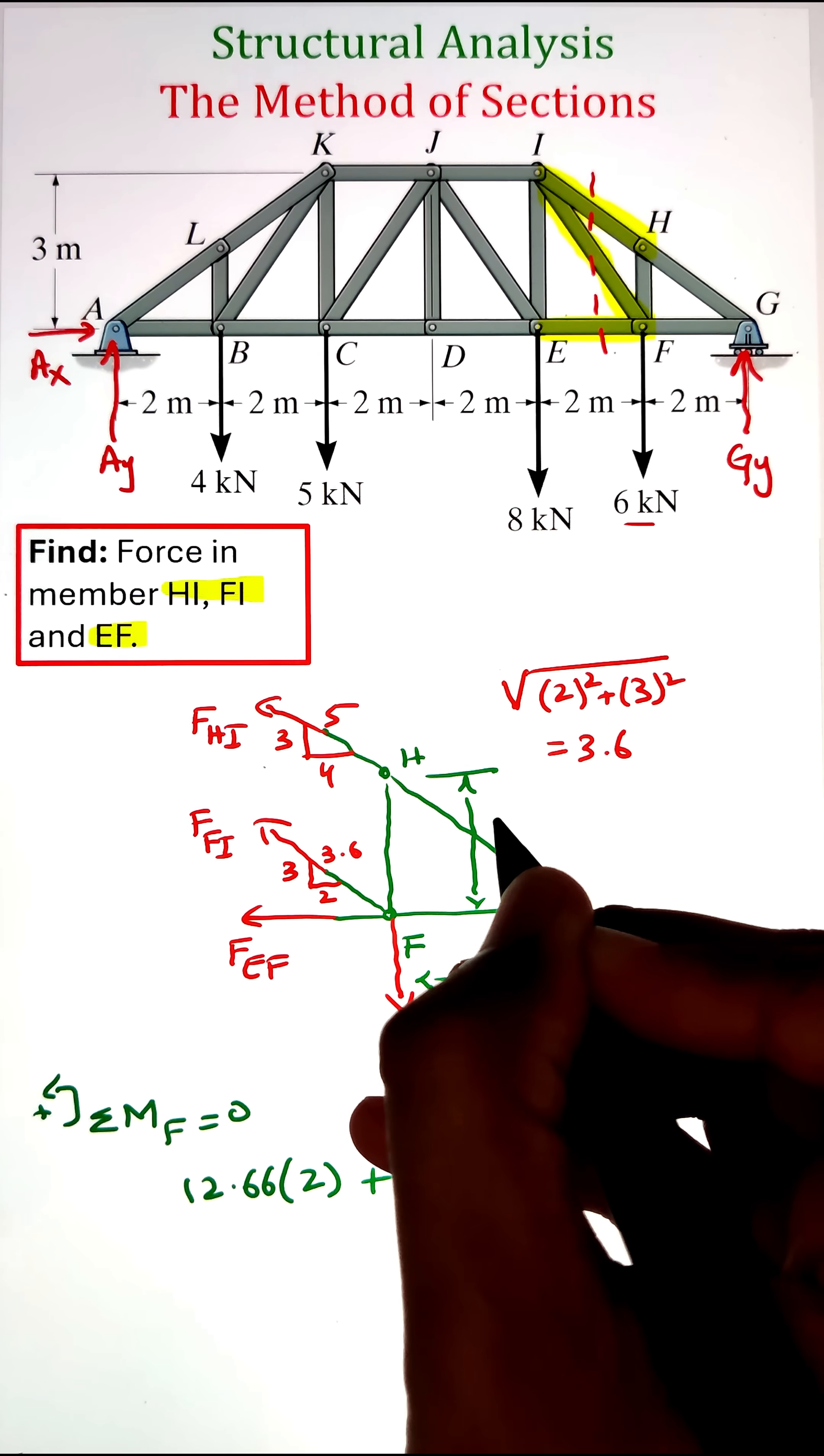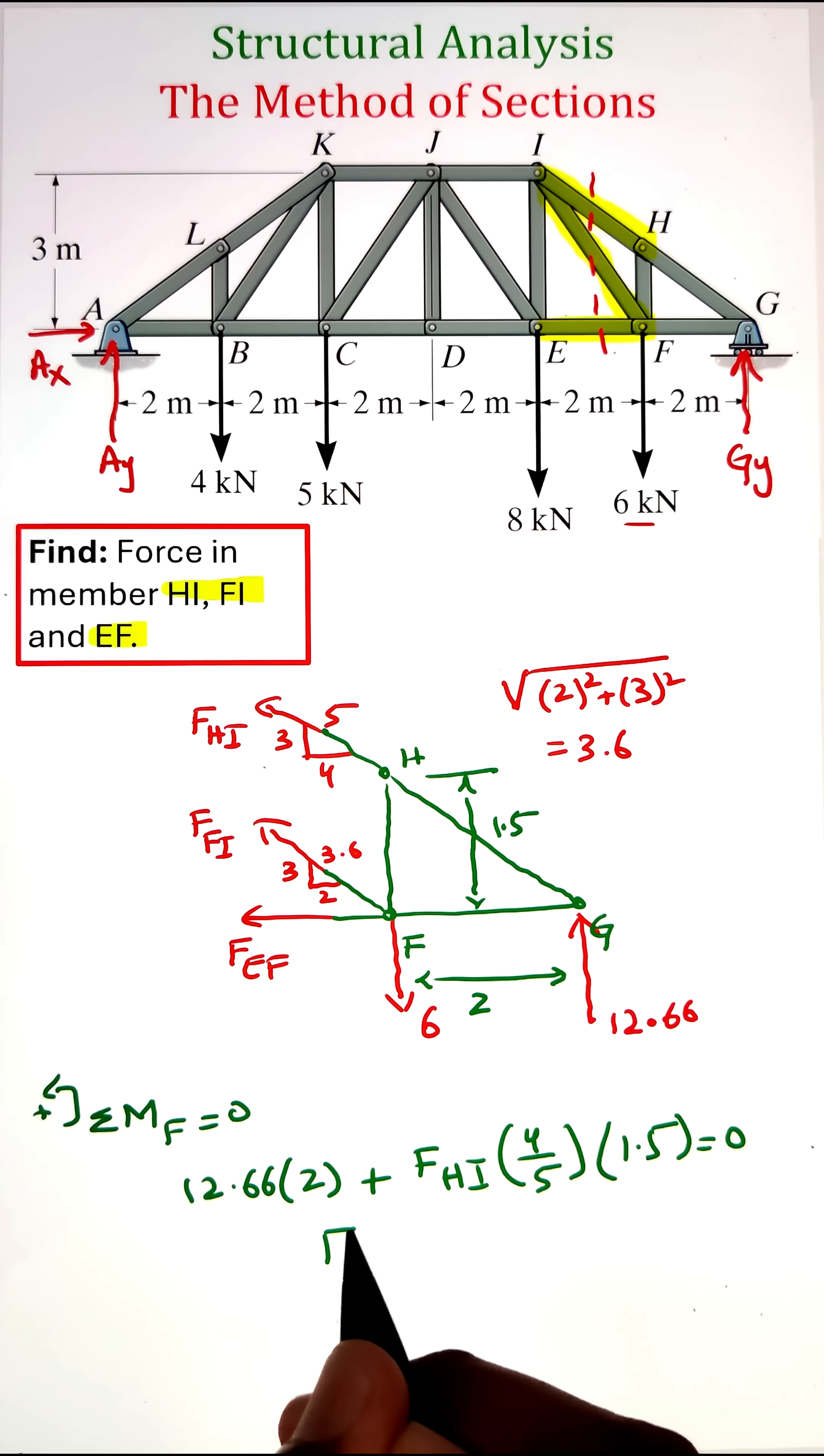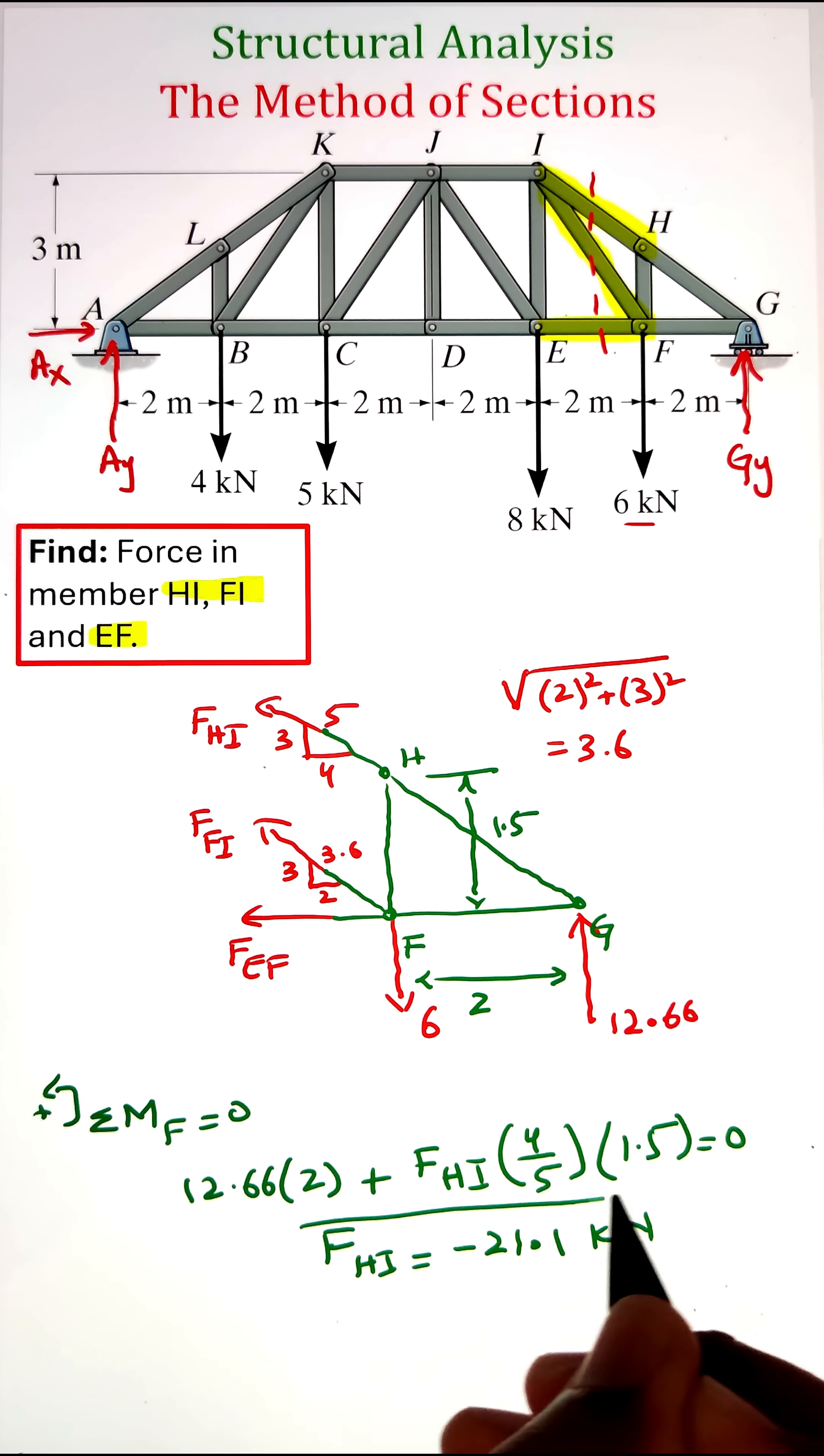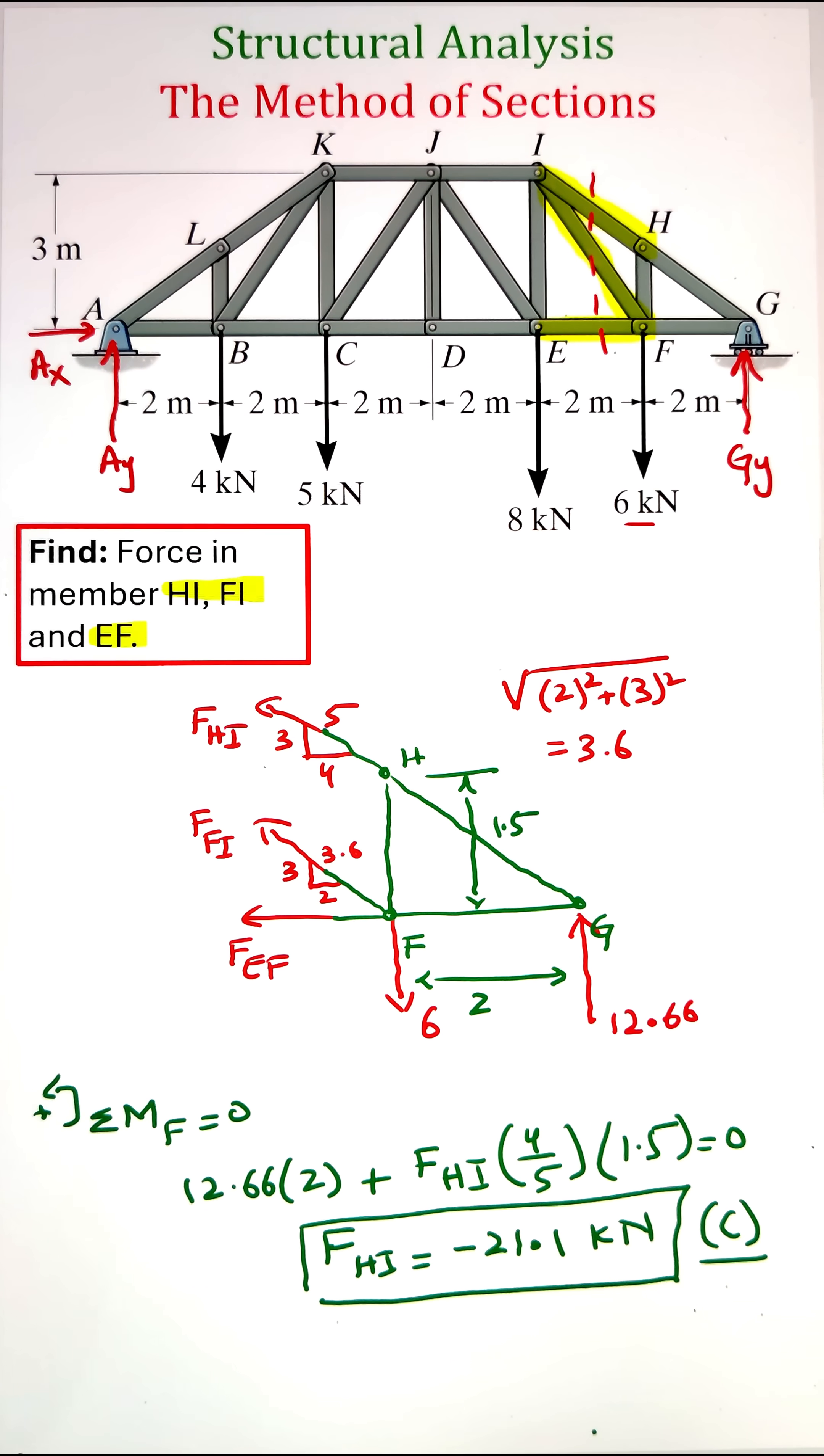Adding these two forces and equating to zero, we get the force in member HI equals negative 21.11 kilonewtons. The negative sign indicates that the direction we picked is opposite to the actual force direction. Since we picked tension, the force in member HI is compression.